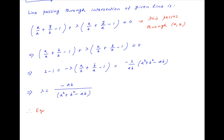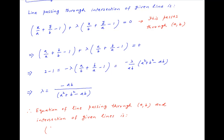Therefore the equation of the required line passing through the point (a, b) and the point of intersection of the two given lines can be written as x upon a plus y upon b minus 1 plus lambda, which equals minus ab upon a squared plus b squared minus ab,